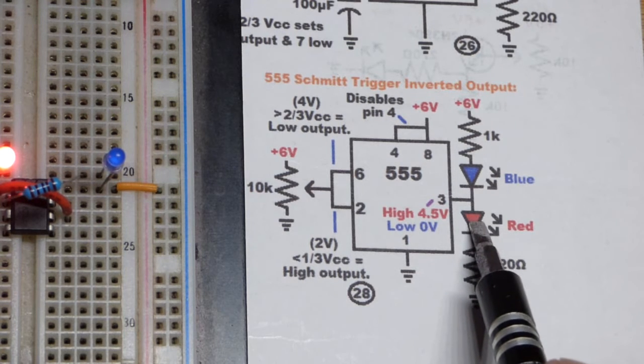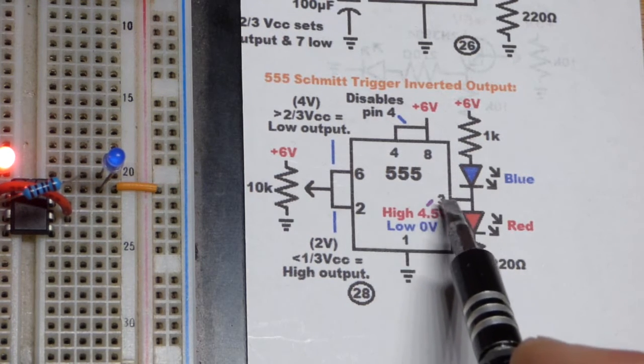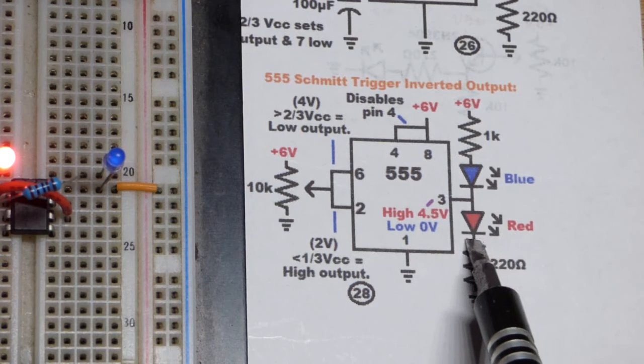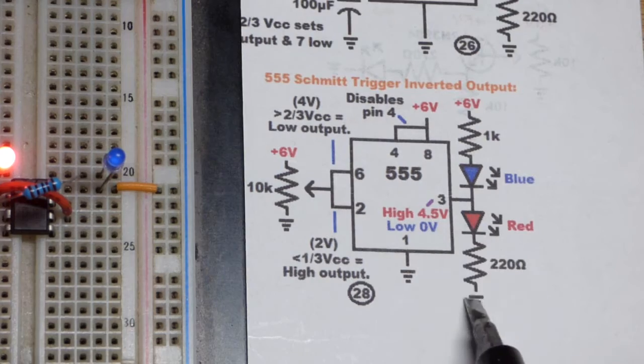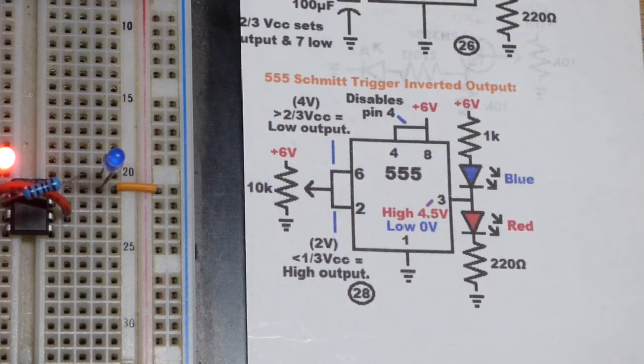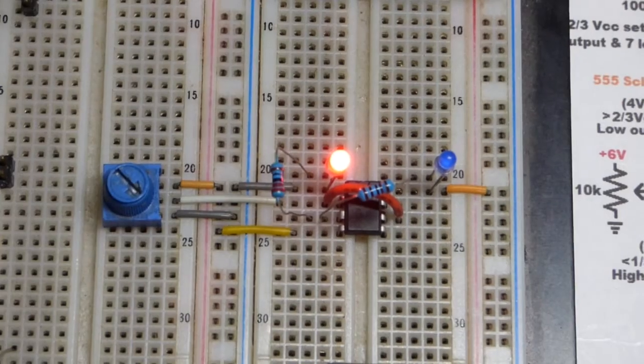So more current goes through the red LED thanks to its reduced voltage as well, but also because it doesn't get as bright as the blue LED. So that's going to let a lot more current go through, but then the LEDs get about the same brightness as you can see there.